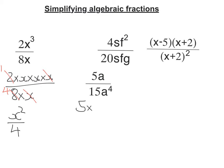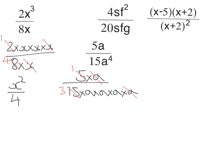For this one, I've got 5 times a on the top, and on the bottom I've got 15 times a times a times a times a. I can cancel an a and divide through by 15, giving me a 1 and a 3. So on the top I have a 1 — it's not blank — and on the bottom I've got 3 and a cubed. Remember, if you get rid of everything on the top, you're still left with a 1, and the bottom still needs to be on the bottom.